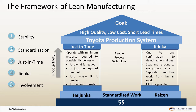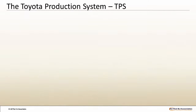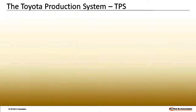There should be a process with minimum inputs and maximum outputs. This should involve everyone in the company. There should be respect for people. The lead time for the entire process should be minimum. The resultant of all these is high quality. TPS — Toyota Production System.